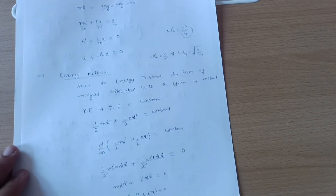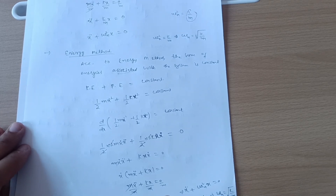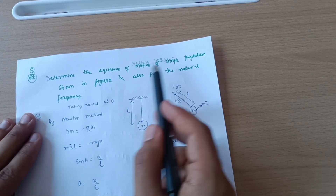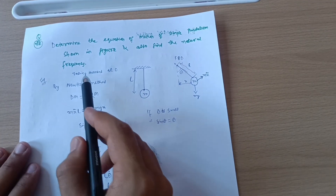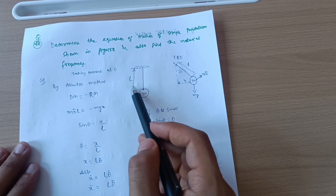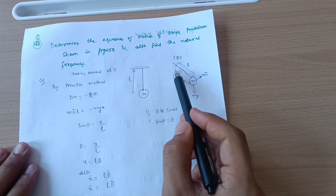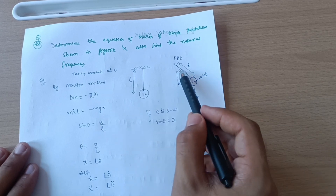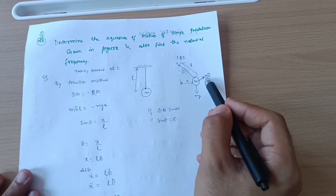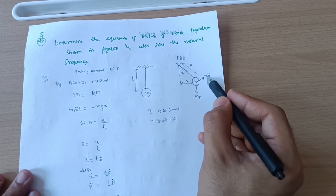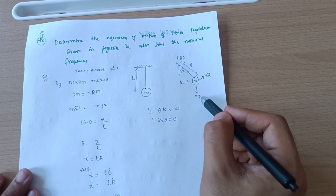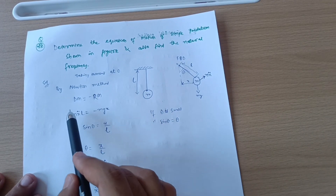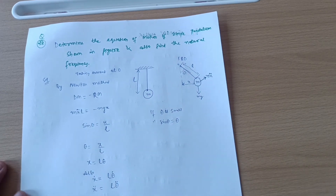Now let's solve one problem. Determine the equation of motion of a simple pendulum shown in the figure and also find the natural frequency. This is the pendulum: mass m and length l. After drawing the free body diagram, when you oscillate the pendulum, the mass displaces with distance x, the pendulum deviates with angle theta, inertia force m·ẍ acts rightward, and weight mg acts downward.